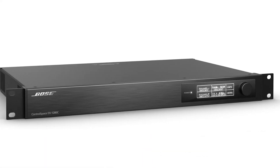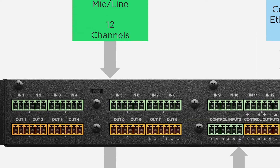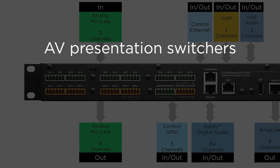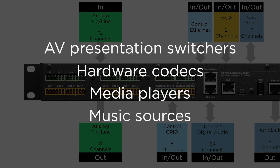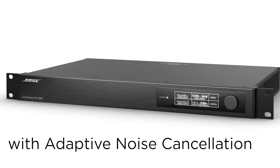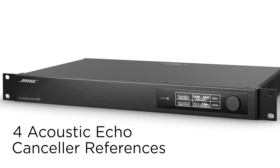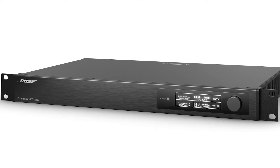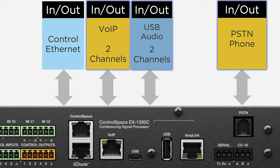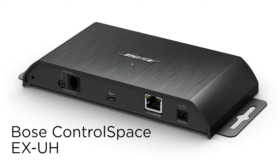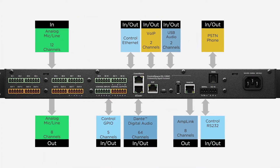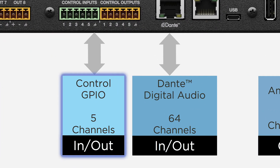The EX1280C is powerful enough to simultaneously process and control multiple rooms, including room combining, and it provides 12 local analog mic line inputs and eight outputs. Audio from AV presentation switchers, hardware codecs, media players, and music sources can be added to the audio system. The EX1280C incorporates 12 routable acoustic echo cancelers with adaptive noise cancellation, non-linear processing, and comfort noise to enhance meeting clarity and intelligibility. Four AEC references support multiple rooms and zones. ControlSpace EX provides system design flexibility, allowing VoIP, USB, and telephone devices to be directly connected to the EX1280C processor. Telephone codecs can be augmented with the EXUH endpoint. The EX1280C also provides advanced logic control and in many applications can minimize the need for a third-party user controller.